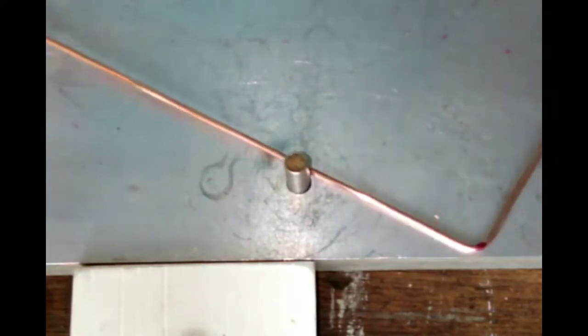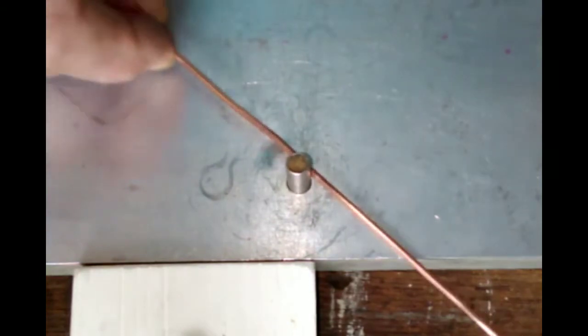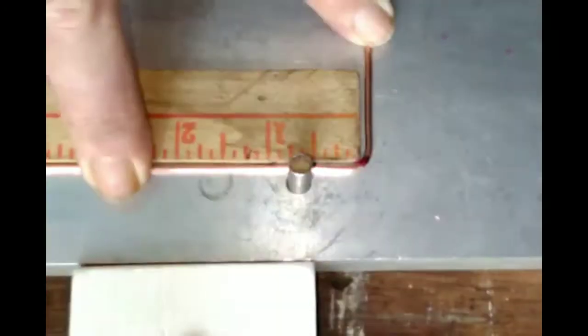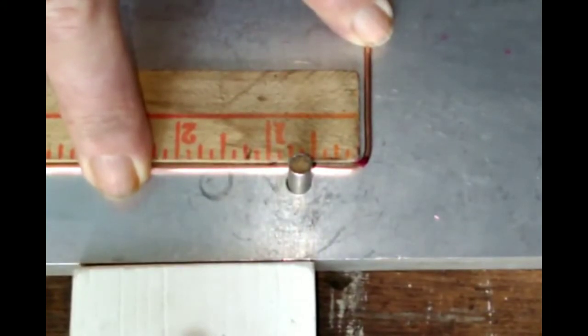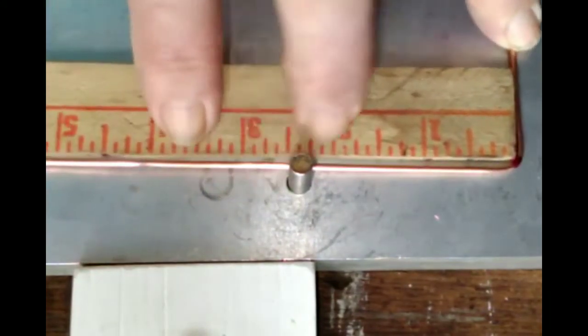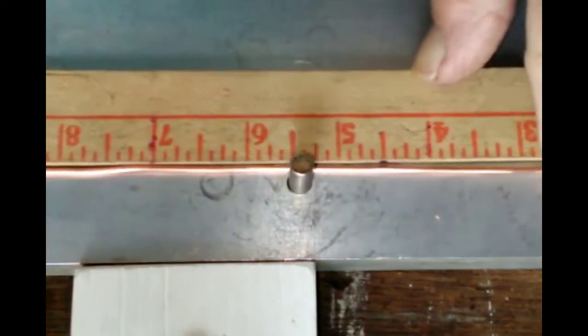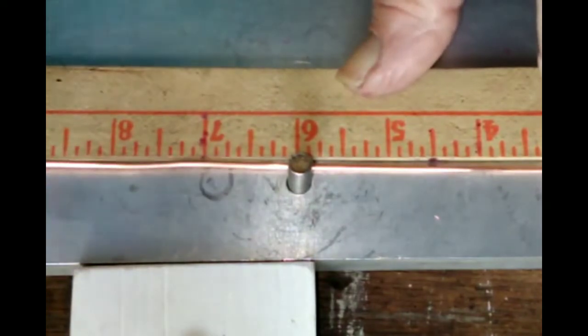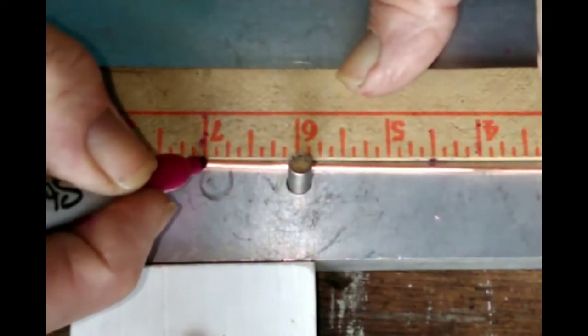Now the next bend is going to go from here down. We're going to go in the opposite direction seven inches. So I place my ruler in the corner, slide down, find my seven inch mark and mark the copper at seven inches.